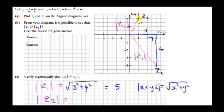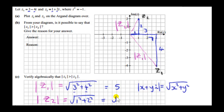Now let's get the modulus of Z2. This distance here is 1 and the distance from here to here is the imaginary part, which is 2. So we have the square root of 1 squared plus 2 squared — squaring the real and imaginary parts, summing and taking the square root. This gives us root 5. We can clearly see that mod Z1, which is 5, is greater than mod Z2, which is the square root of 5.